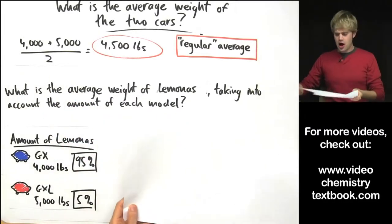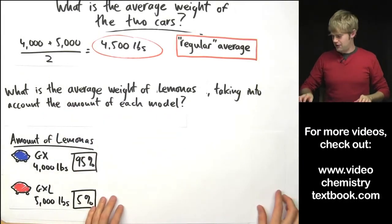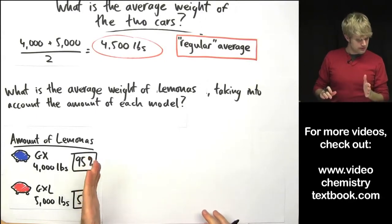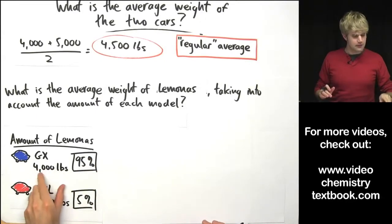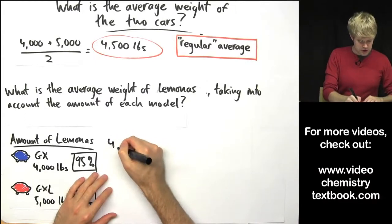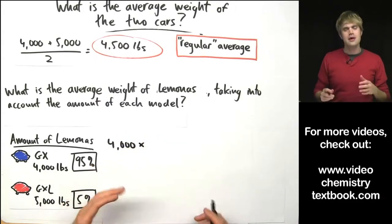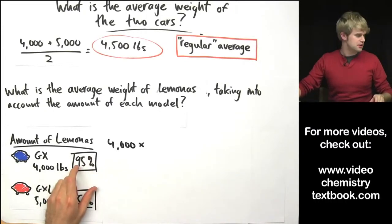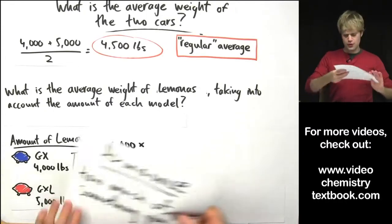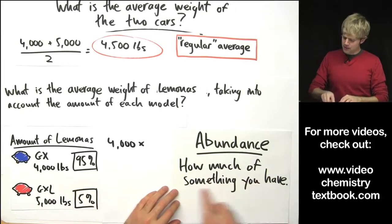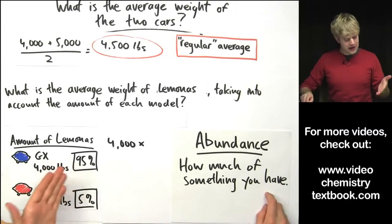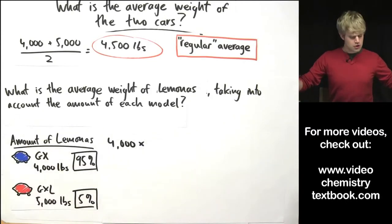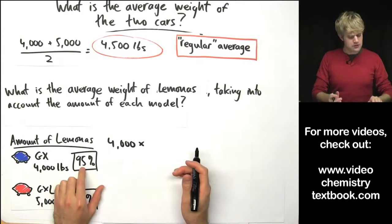This is where we get to the idea of the weighted average. So to calculate the weighted average, I'm going to take the amount that the Lamonas GX weighs, which is 4,000 pounds, and then I'm going to multiply it by the percent abundance. Abundance is just a fancy word that means how much of something you have. So here we have 95% of the total Lamonas are GXs. So I'm going to multiply it by the abundance of the GX.